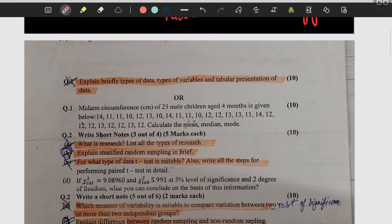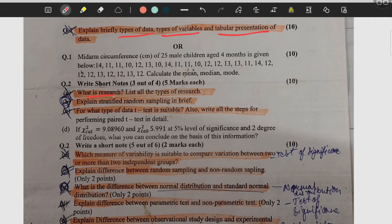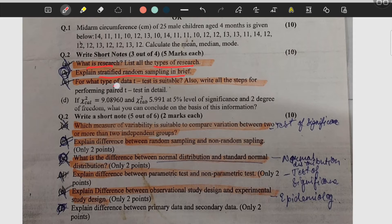First question is type of data, types of variable, and tabular presentation of data. Then what is research and types of research, what is stratified random sampling, what is type of data and what is t-test, and what are the steps to perform it.